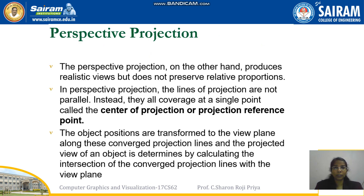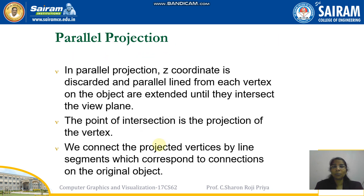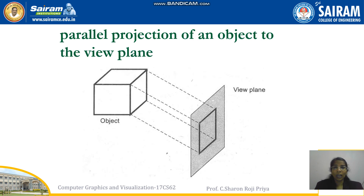That is perspective projection. Next is parallel projection. In parallel projection, the distance between the camera and the object is infinite. Since it is infinite, the COP is replaced with DOP — that is, direction of projection. The projection lines will be parallel and won't converge at any point.